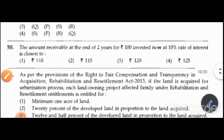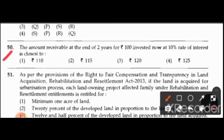Question 51: The amount receivable at the end of two years for rupees 100 invested now at 10 percent rate of interest is closest to: 110, 115, 120, or 125. The right answer is option 3: rupees 120.